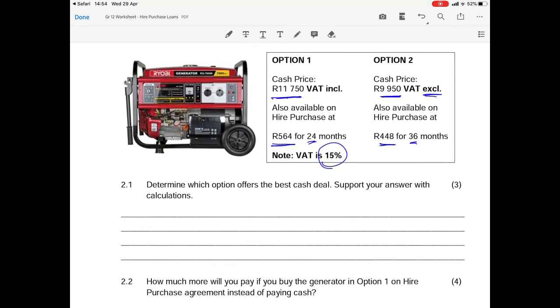You are reminded that VAT is sitting at 15%. Question 2.1: Determine which option offers the best cash deal. Support your answer with calculations. Option 1's cash deal is R11,750 cash VAT inclusive.